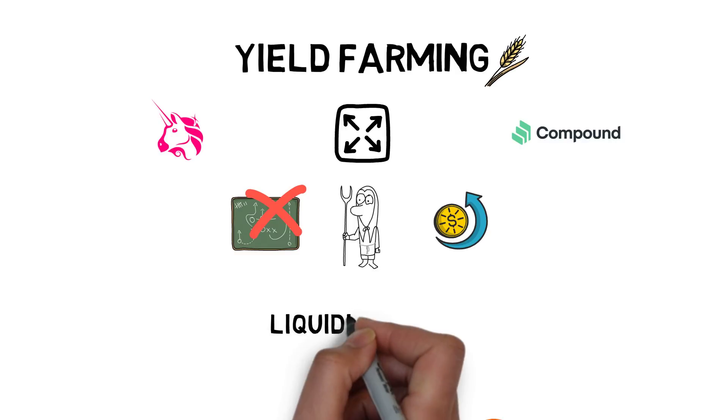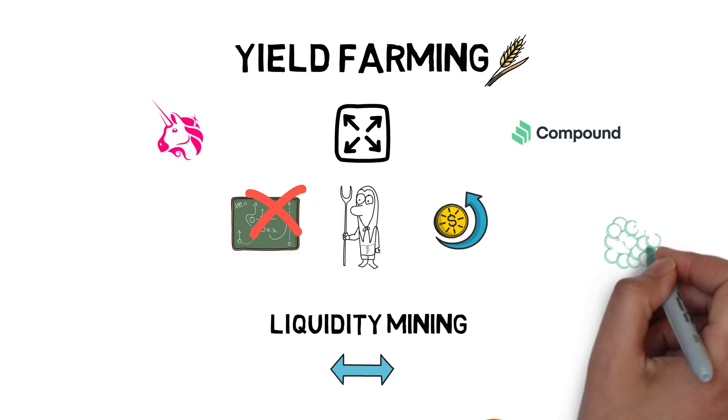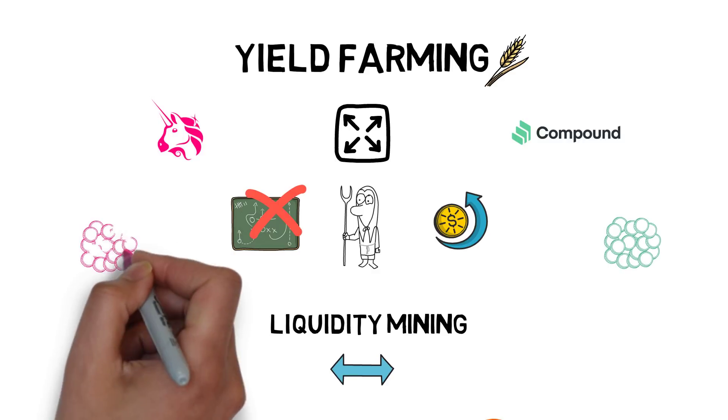Liquidity mining plays a big role in yield farming, to such an extent that sometimes these two concepts are used interchangeably. Liquidity mining is a process of distributing extra tokens to the users of a protocol.